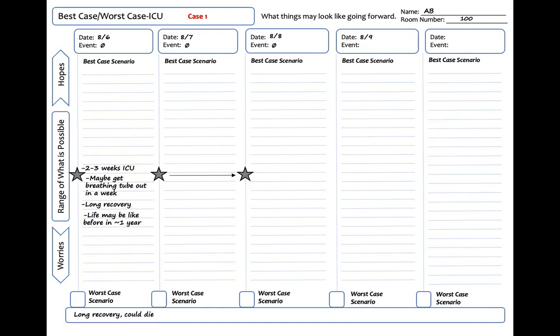Now it is 8-9. Although TPN was started yesterday, this also does not need to be written down as an event because it does not impact her overall story right now. Even though we can't feed her, we think this will get better and won't ultimately change her best case. I write a zero again. Since her overall story is the same, the star remains in the same place. In the future we will know more. I draw an arrow over.